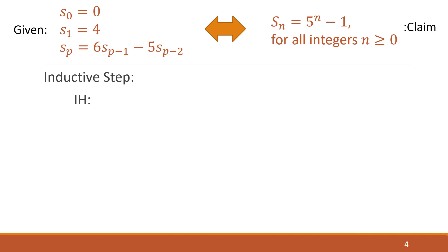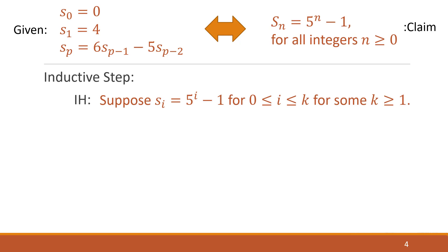For the inductive step, we first state our inductive hypothesis. As always with strong induction, we're not just supposing it works for some k — we suppose that it works for a range of values from 0 to k. So we suppose that s(i) = 5^i − 1 for all i in the range 0 to k.